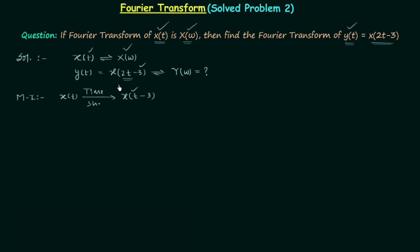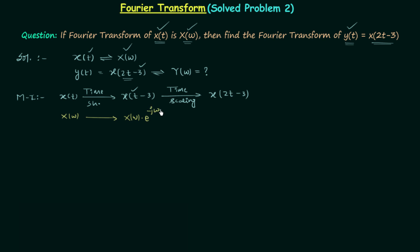You cannot perform the shifting operation with respect to 2t because 2t is not the independent variable — this is an important point discussed in the basic lectures. After time shifting, we perform the time scaling operation, scaling time by 2, to get x(2t - 3). The scaling operation is also performed with respect to t only. Now we will modify the Fourier transform accordingly: after time shifting, X(ω) gets multiplied by e^(-jω·3). After the subsequent time scaling, the Fourier transform becomes (1/|2|) · X(ω/2) · e^(-j(ω/2)·3).